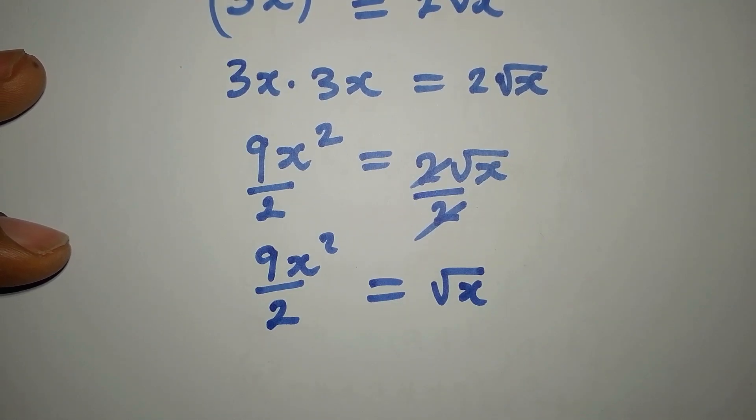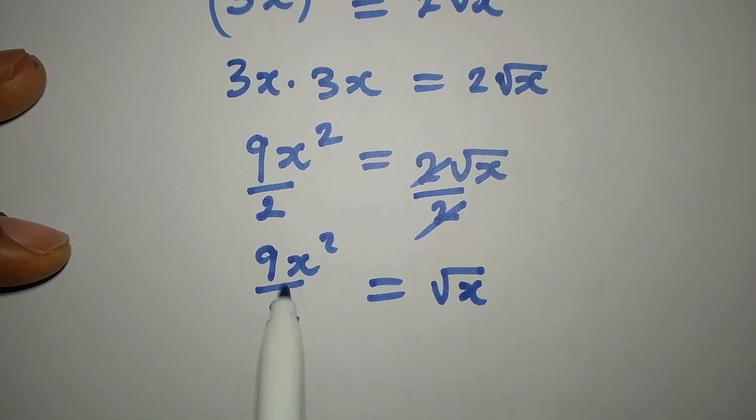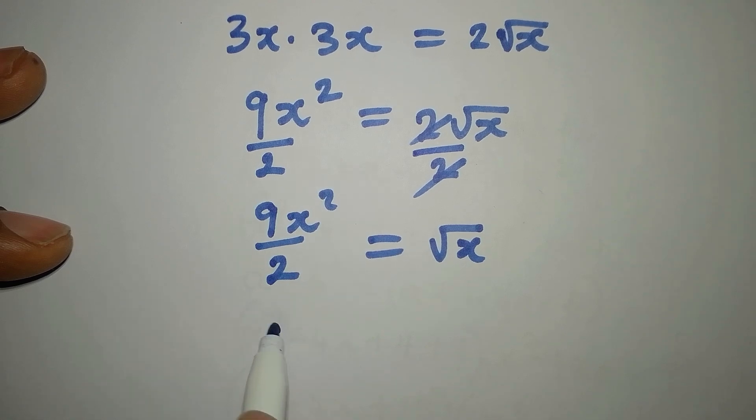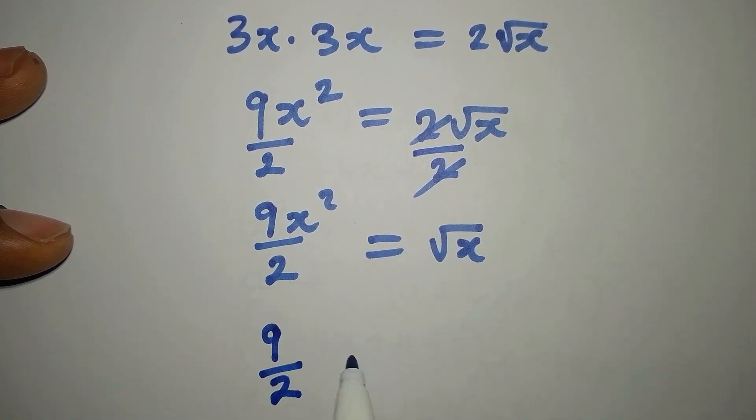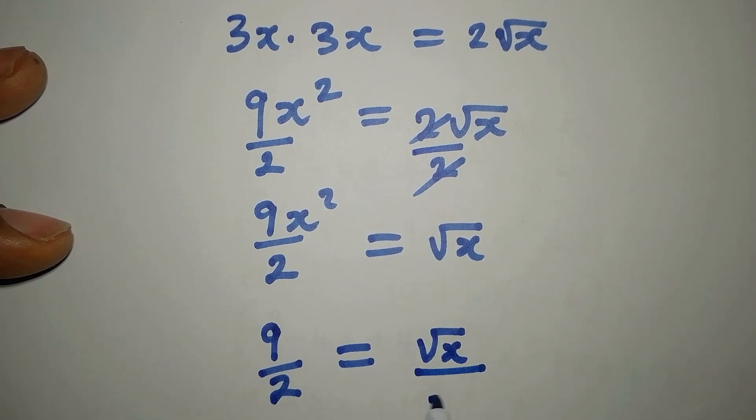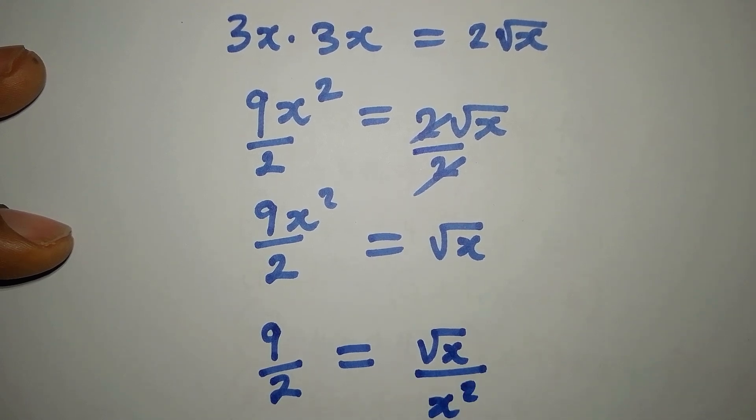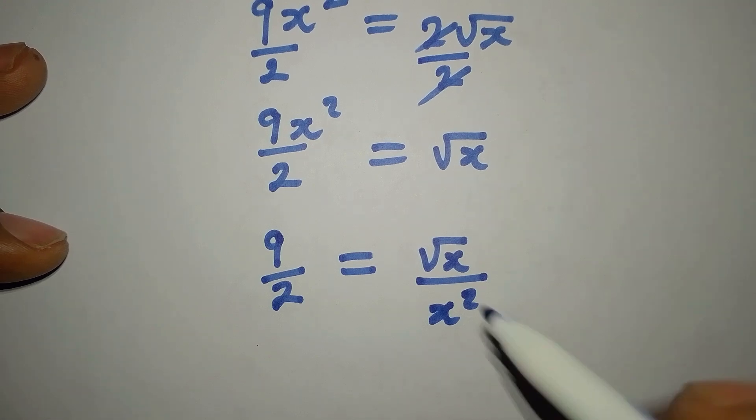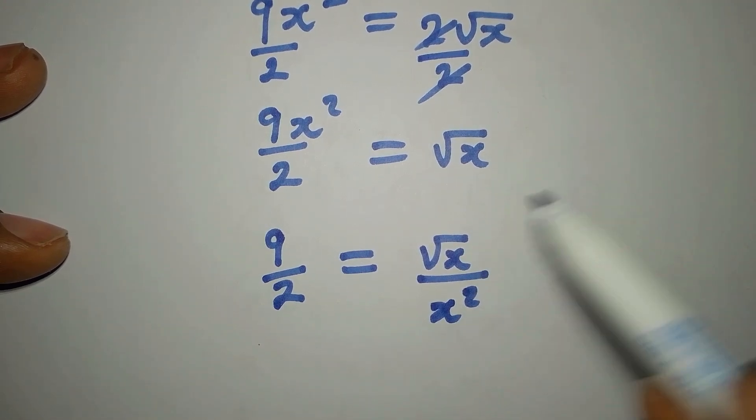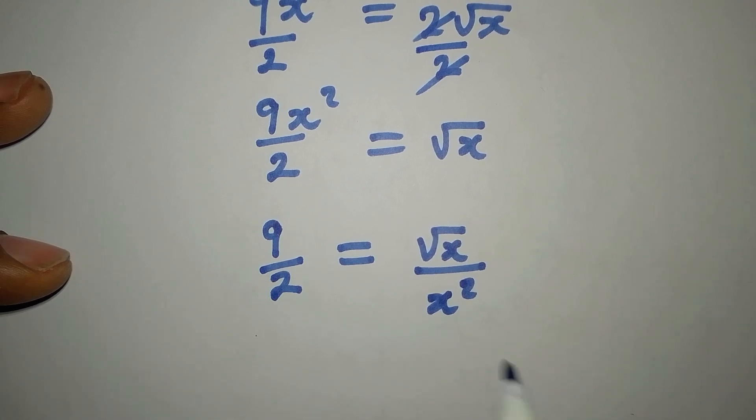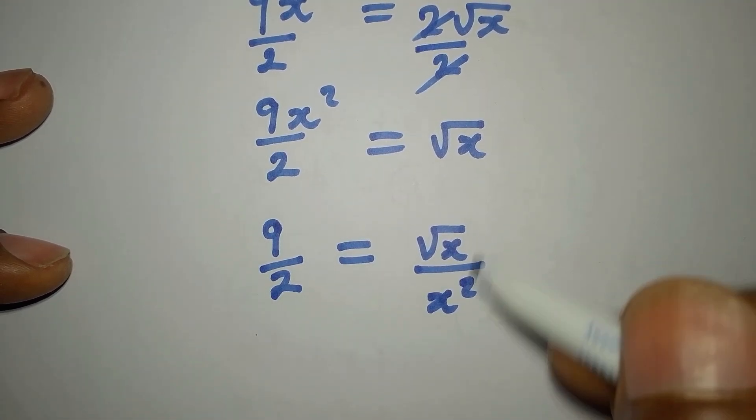Then what if I divide this by x², so that means I can have 9/2 on this side, then here we have √x/x². So now we have x on the same side and this is on the other side.